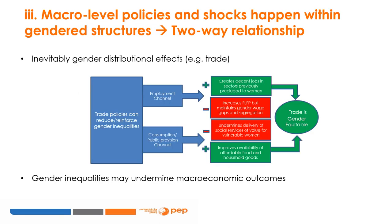Macroeconomic policies and economic shocks happen within economies characterized by gender bias, implying that the relationship between gender and the macroeconomy is a two-way relationship. On one hand, any macroeconomic policy — ranging from taxes to public spending to international trade — inevitably has gender distributional effects. The diagram on this slide shows that in relation to trade, some policies can be gender equalizing while others worsen gender inequality. For more detailed discussion, you are encouraged to take the module on Gender Perspectives on International Trade in the PEP Gender Analysis and Economic Policy Research course.